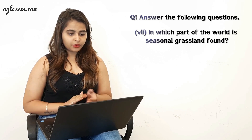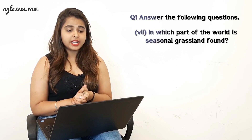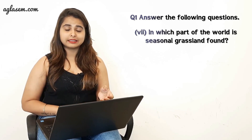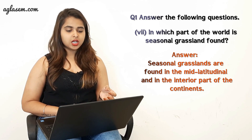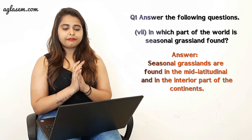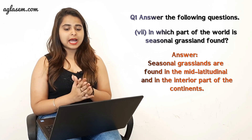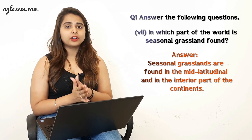The last part of question one asks: in which part of the world are seasonal grasslands found? Seasonal grasslands are found in the mid-latitude zone and the interior parts of continents.